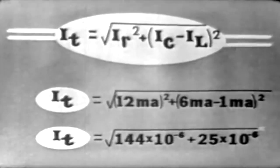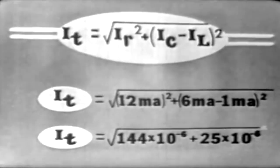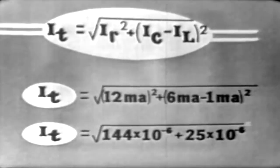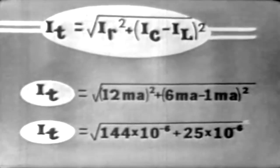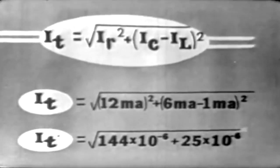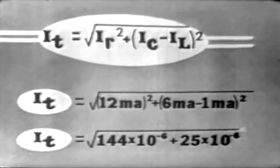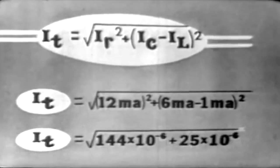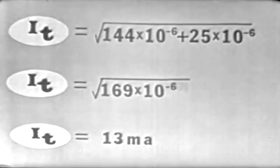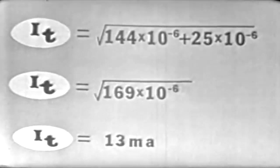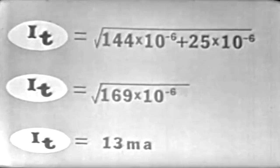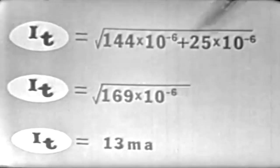Substituting into this formula, 12 milliamperes for IR, 6 milliamperes for IC, and 1 milliampere for IL, and performing the indicated operation, we can see that 12 milliamperes squared is 144 times 10 to the negative 6. 6 minus 1 is 5. 5 squared would be 25 again times 10 to the minus 6, maintaining our exponent. Adding, 144 plus 25 would be 169 times 10 to the minus 6. Remember, when we add, our exponents would remain the same.